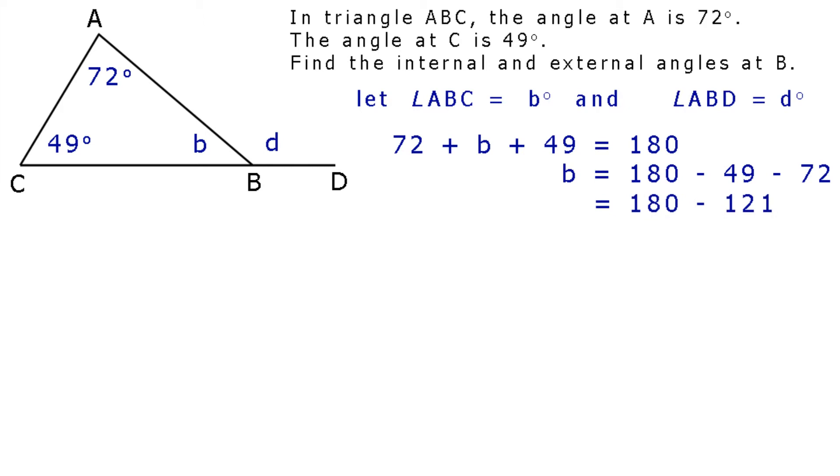Minus 49 and minus 72 equals minus 121. So, B equals 180 minus 121. 180 minus 121 is 59. So, B is equal to 59. The internal angle at B is 59 degrees.